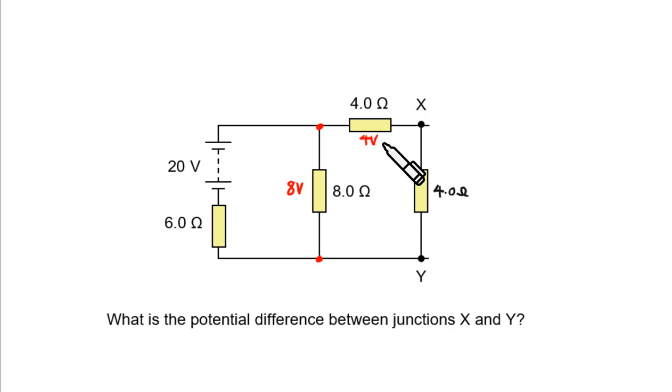So we have 4 volts across each of them. And that makes the PD between X and Y 4 volts. Puzzle solved.